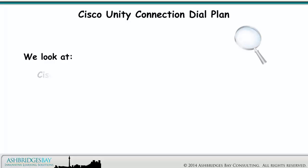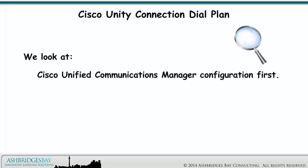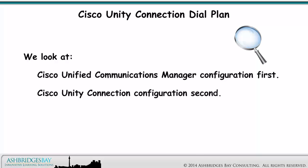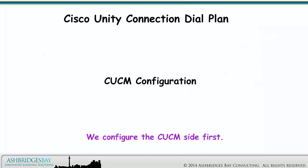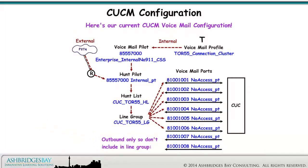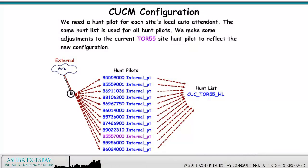We look at Cisco Unified Communications Manager configuration first and Cisco Unity Connection configuration second. We configure the CUCM side first. Here's our current CUCM voicemail configuration. We need a hunt pilot for each site's local auto-attendant. The same hunt list is used for all hunt pilots. We make some adjustments to the current Toronto 55 site hunt pilot to reflect the new configuration.